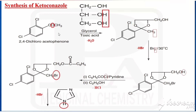Similar to econazole, the starting material is 2,4-dichloroacetophenone. With that, we are adding glycerol in the presence of p-toluenesulfonic acid. Glycerol is CH2OH–CHOH–CH2OH. By the addition of glycerol, these two hydrogens are taken, combining with the oxygen and removed as water. That is why this carbon now unites with these two oxygens to satisfy the valency, and we are getting a dioxolane ring.